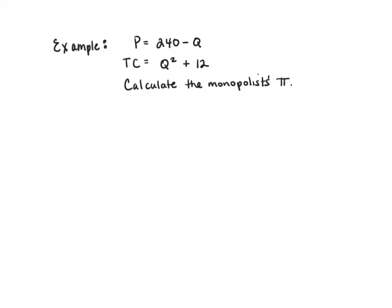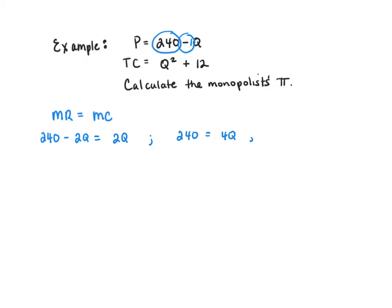Let's wrap up with a simple example where a monopolist faces the demand curve P equals 240 minus Q and has total cost equal to Q squared plus 12. Like all profit maximizing firms, the monopolist will choose to produce the quantity at which marginal revenue equals marginal cost. In monopoly, marginal revenue has the same intercept as demand but exactly double the slope — here, the slope of demand was minus 1, so the slope of marginal revenue is minus 2. Marginal cost is the derivative of total cost with respect to Q, giving us 2Q. Setting MR equal to MC: 240 minus 2Q equals 2Q, so 240 equals 4Q, which means the profit maximizing quantity is 60 units.